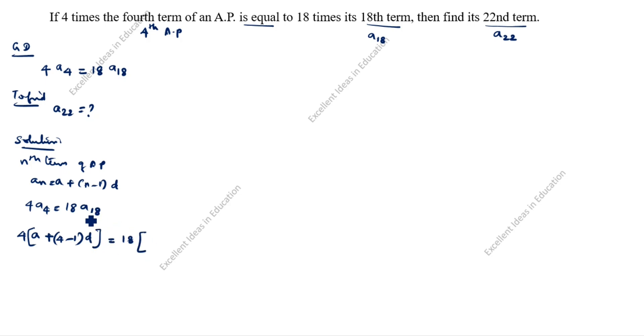Open the bracket. a18, how we will write a18? We will write as per this formula. A plus n is 18 minus 1 into d. 4, open the bracket. A plus 4 minus 1 is 3, 3d equal to 18. Open the bracket. A plus 18 minus 1 is 17d.